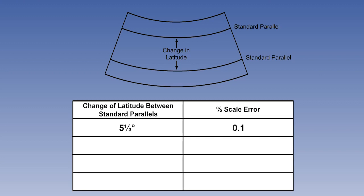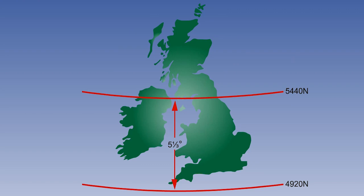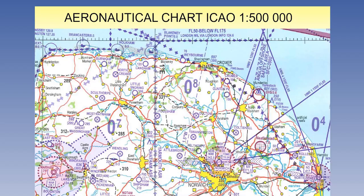Why have we chosen a figure of 5 and 1/3 degrees? Does it have some special significance? As a matter of fact, it does. It is the separation between the parallels of 54 degrees and 40 minutes north and 49 degrees and 20 minutes north. These are the ones used for the CAA UK half-million topographical series.